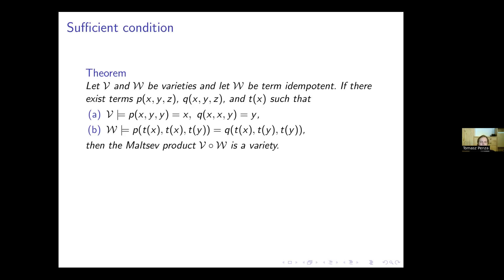Now I can present the sufficient condition for the Malcev product of two varieties to be a variety. Let V and W be varieties of the same type, and W be a term idempotent variety. The Malcev product of V and W will be a variety if there exist terms P, Q, and T such that the following two conditions are satisfied: V satisfies the identity P(x,y,y) = x and Q(x,x,y) = y, while W satisfies a corresponding identity. This is a Malcev-style condition.